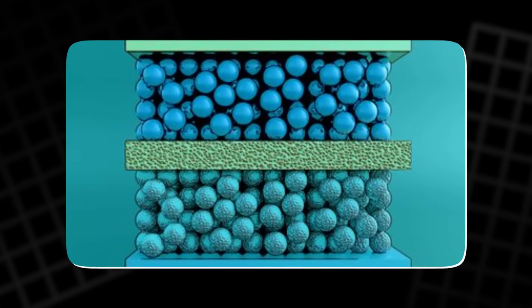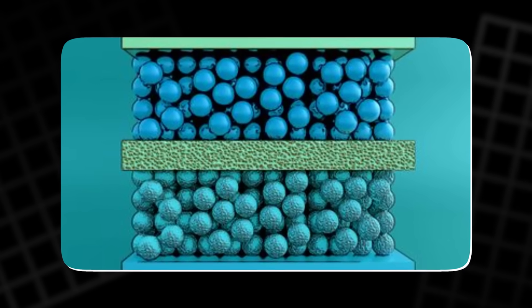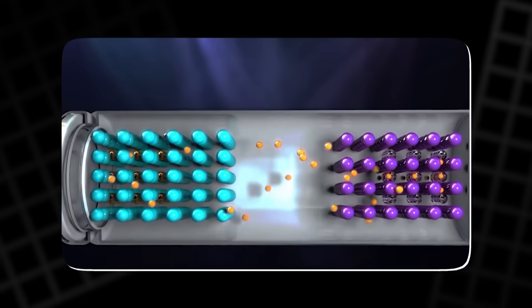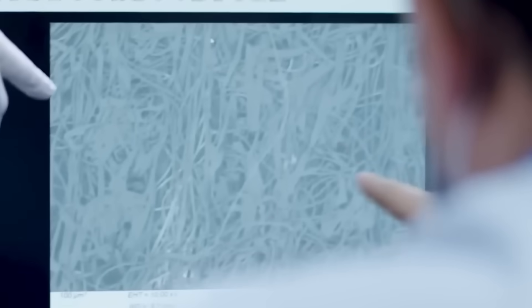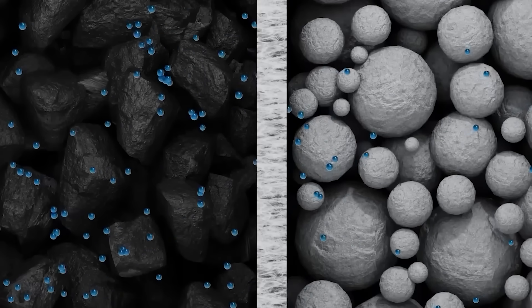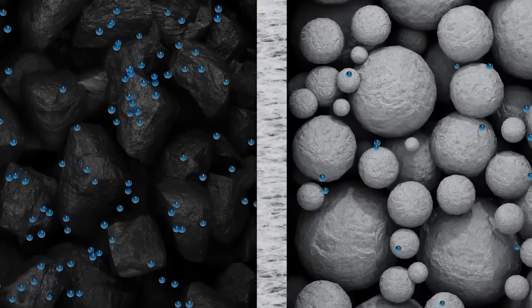Then there is lifespan. Dendrites, the needle-like growths that form as a battery cycles, don't vanish just because the electrolyte is solid. They can still push through solids and create internal shorts. Designs try tougher separators, better current control, and pressure management, but none of it is free.